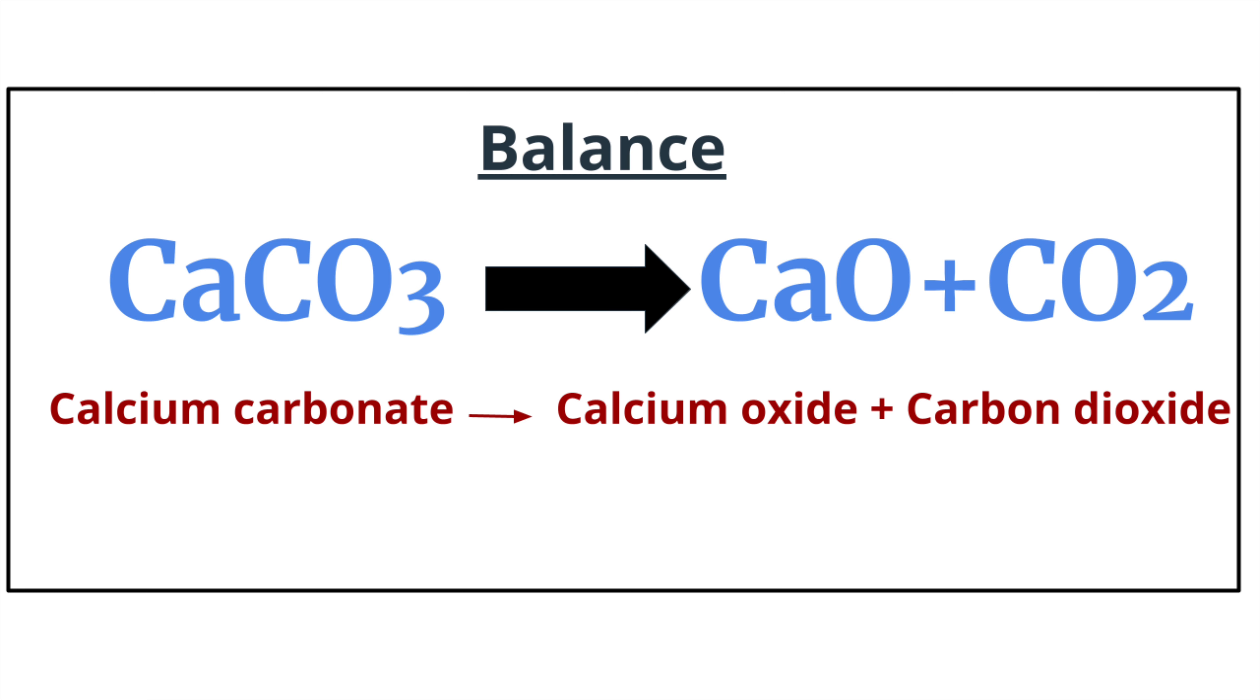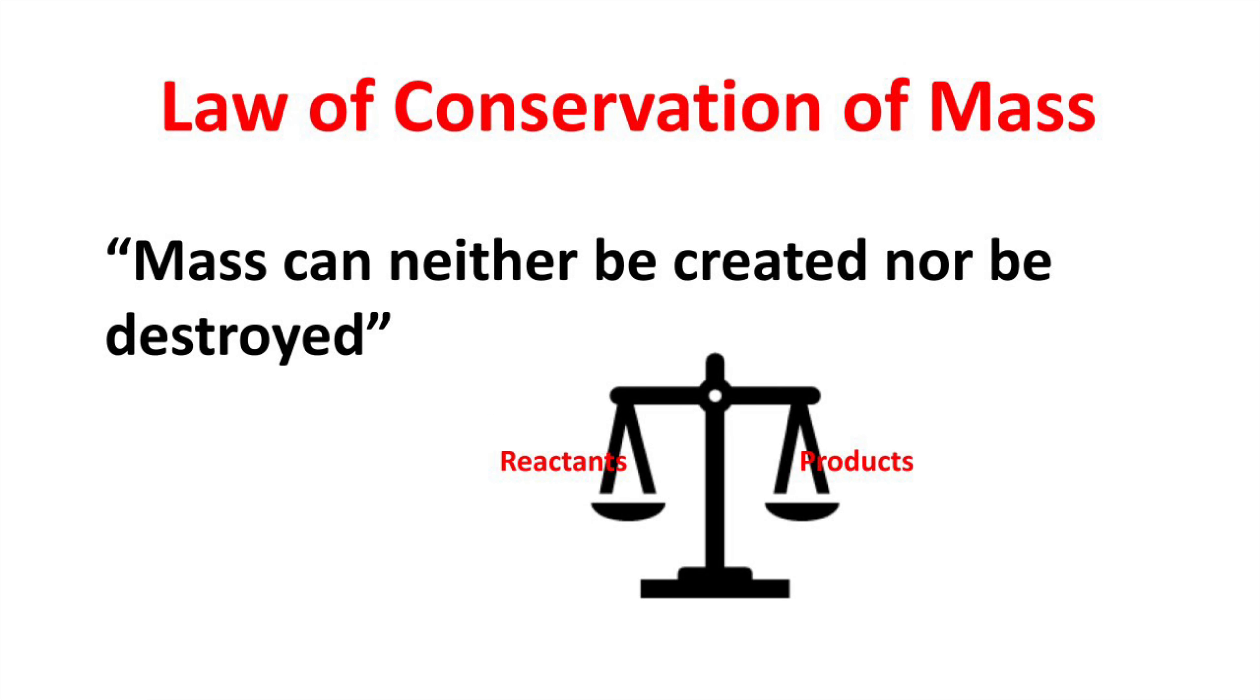Chemical equations are balanced based on law of conservation of mass which states that mass can neither be created nor be destroyed. It means number of reactants should be equal to number of products.